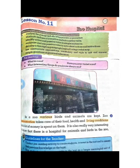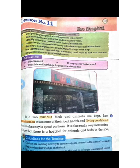Start reading paragraph number one. In a zoo, various birds and animals are kept. Zoo administration takes care of their food, health, and living conditions.